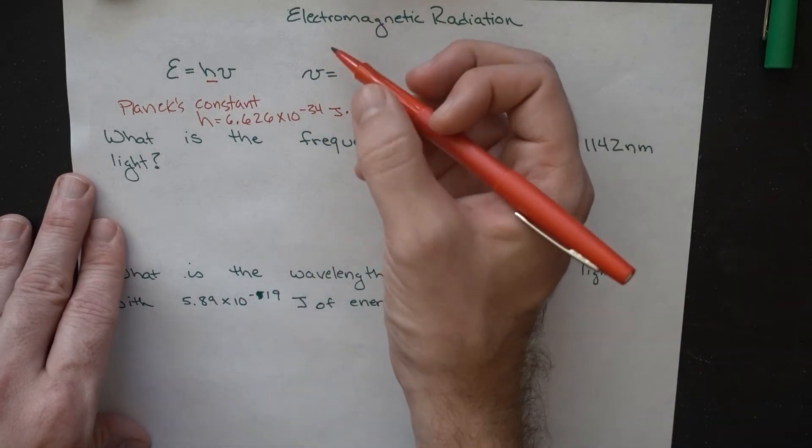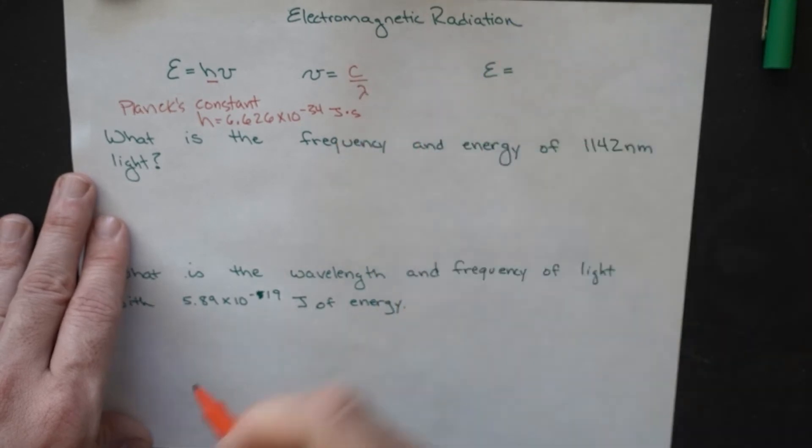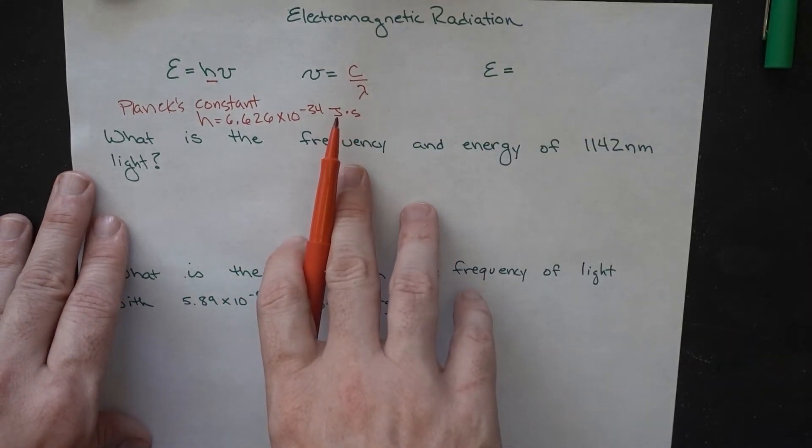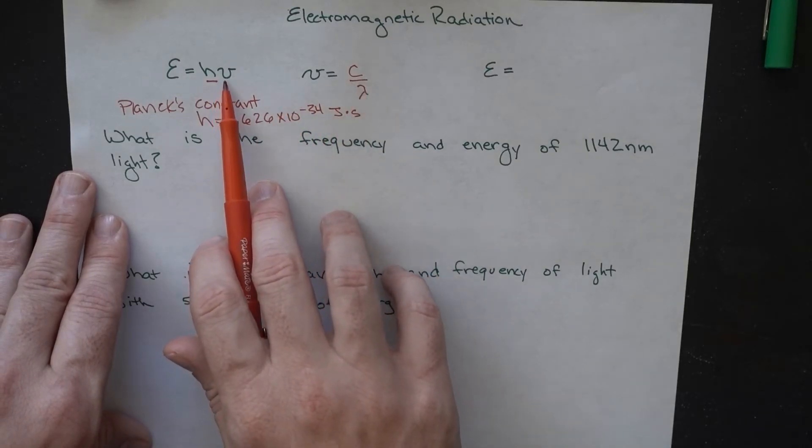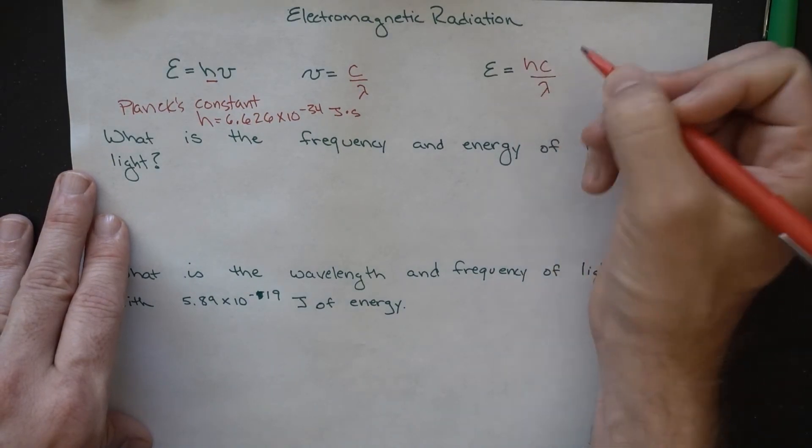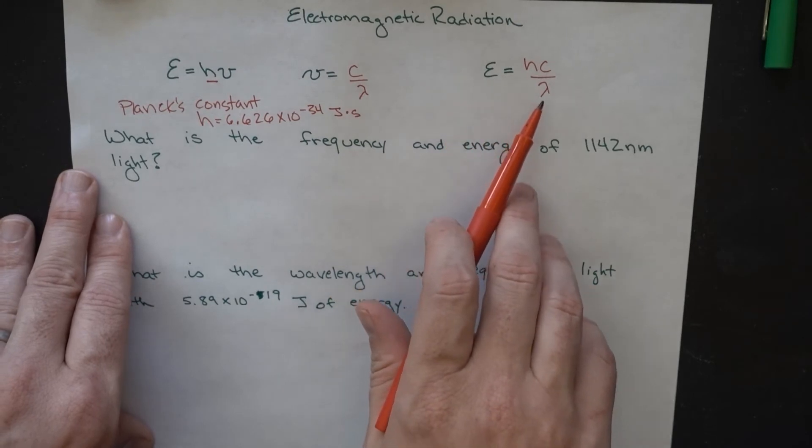What we can do is we can say that the frequency here, well, we sort of know an equation for this. It's C over lambda, just a rearrangement of lambda times nu equals C. If we were to plug this in for this value here, we can say that E is equal to HC over lambda. So, now we've got a new relationship that has energy and lambda in it.